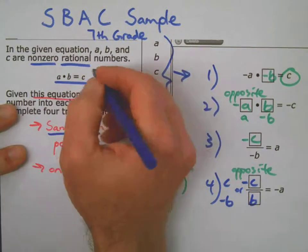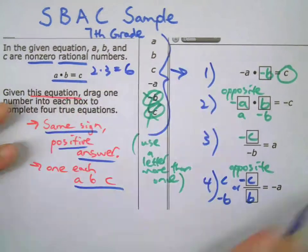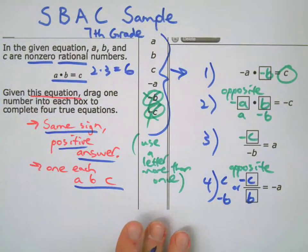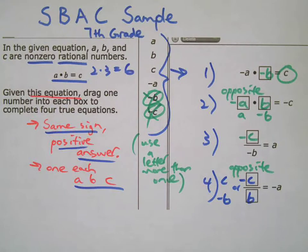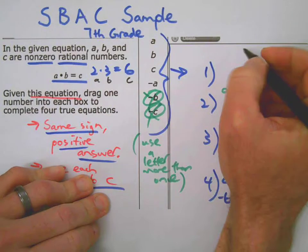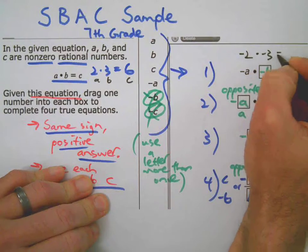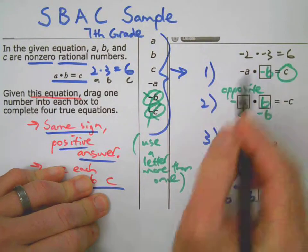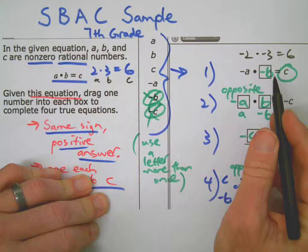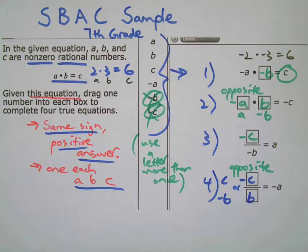And hey, if you had to, you could do a simple sample problem like this to test your theory out, okay? For example, if I had negative two times negative three, I would get positive six, right? That works. So you can test your theories out over here.